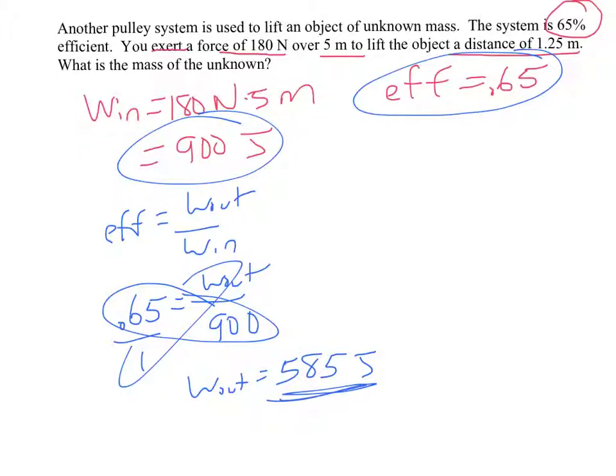And again, that should seem reasonable. If it were 50% efficient, we'd get half of 900, which is 450. But it's 65% efficient, so we get a little more than 450. That's our work out.